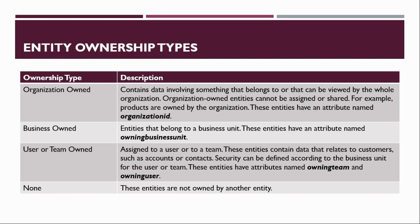The most commonly used entity ownership type is user or team owned. Records of these entities can be assigned to a user or a team, and they contain data related to customers such as accounts or contacts. Security can be defined according to the business unit for a user or team. These entities have attributes named owing team and owing user. The last entity ownership type is called none — these entities do not have any owner, and ownership is defined by the parent record.